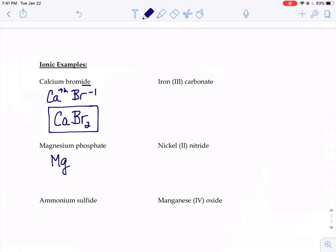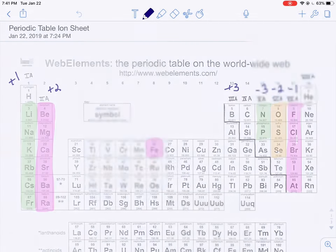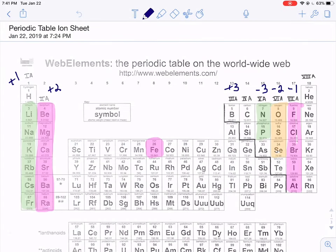Now we have to figure out what the charge on that magnesium would be. So we go to our periodic table, find magnesium. It's in the second column, so it would have a charge of positive two.